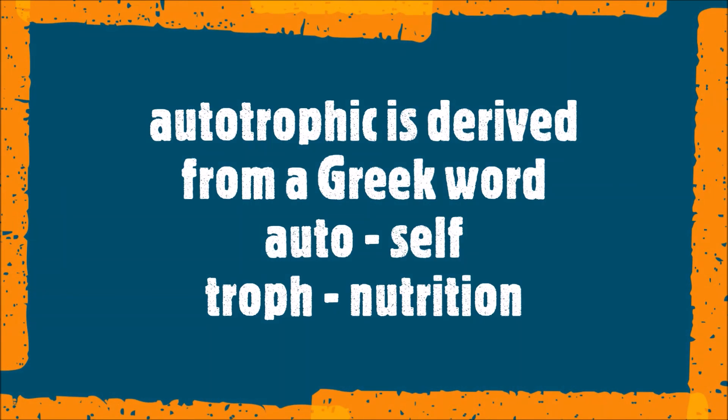What is autotrophic mode of nutrition? The term 'autotrophic' means auto — self, and trophe — nutrition. It is also called self-nutrition. The organisms prepare their own food from inorganic raw materials like carbon dioxide and water present in the surroundings by using solar energy.